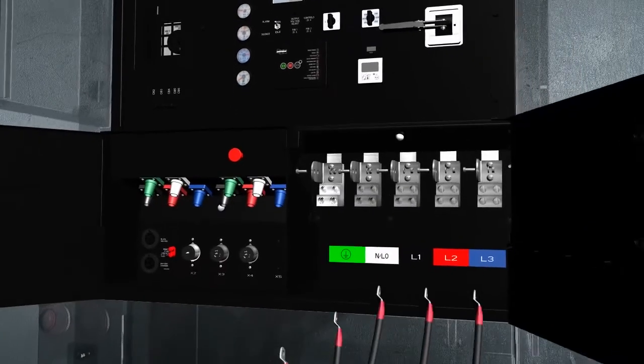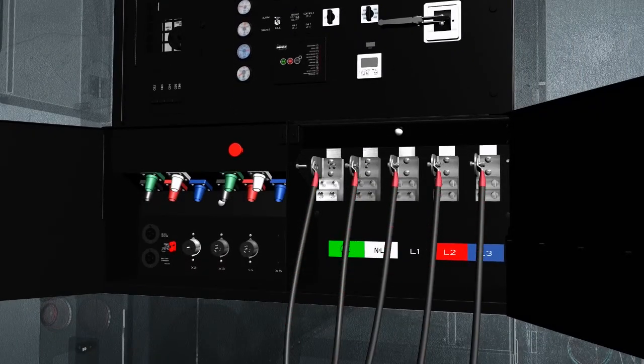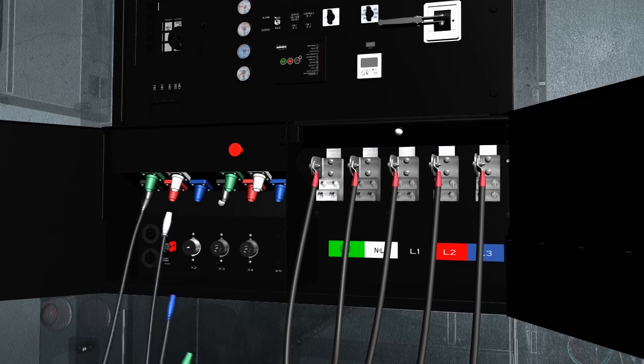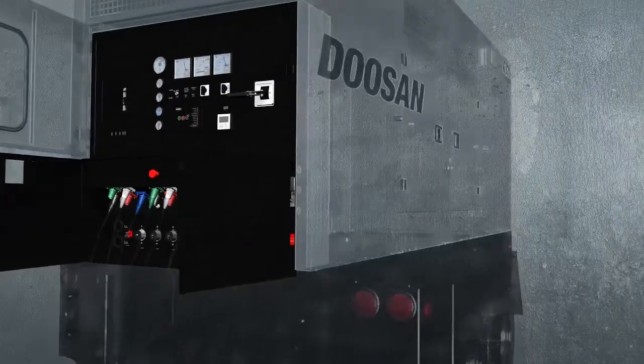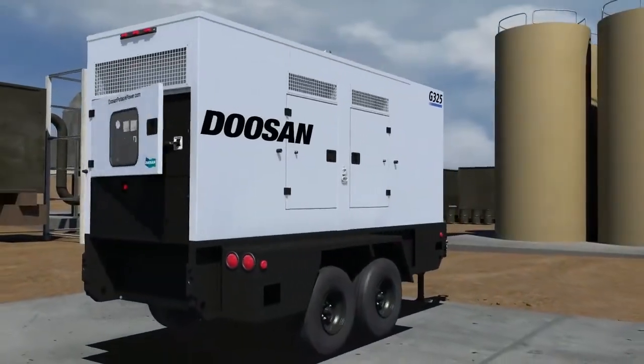Once power reaches the connection panel, operators can attach power cables to the generator's terminal board, receptacle panel, or cam lock panel, transforming electrical energy into light, heat, or motion, providing the power we rely on every day.